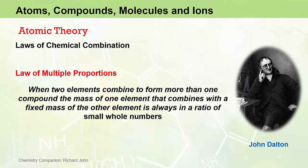The law of multiple proportions states that when two elements combine to form more than one compound, the mass of one element that combines with a fixed mass of the other element is always in a ratio of small whole numbers. In other words, different compounds made from the same elements differ in the relative numbers of each type of atom.